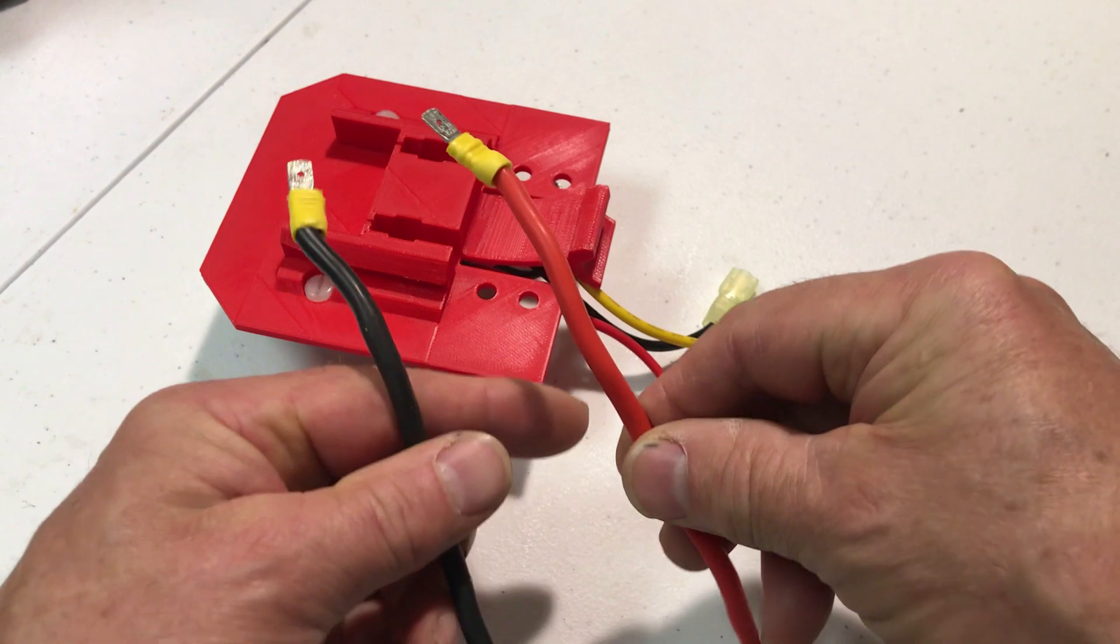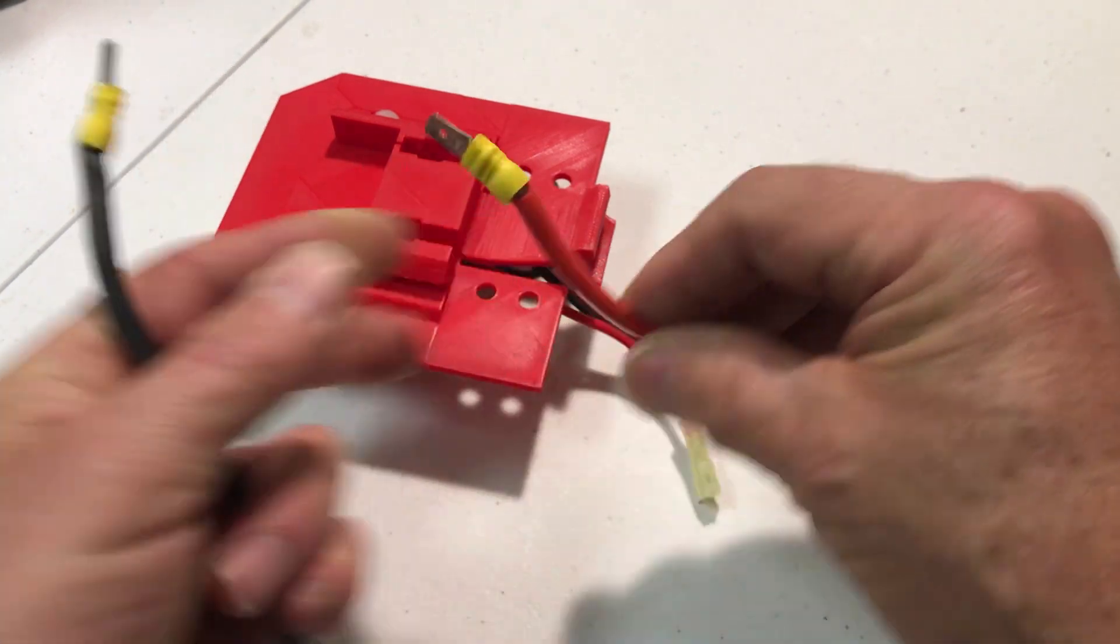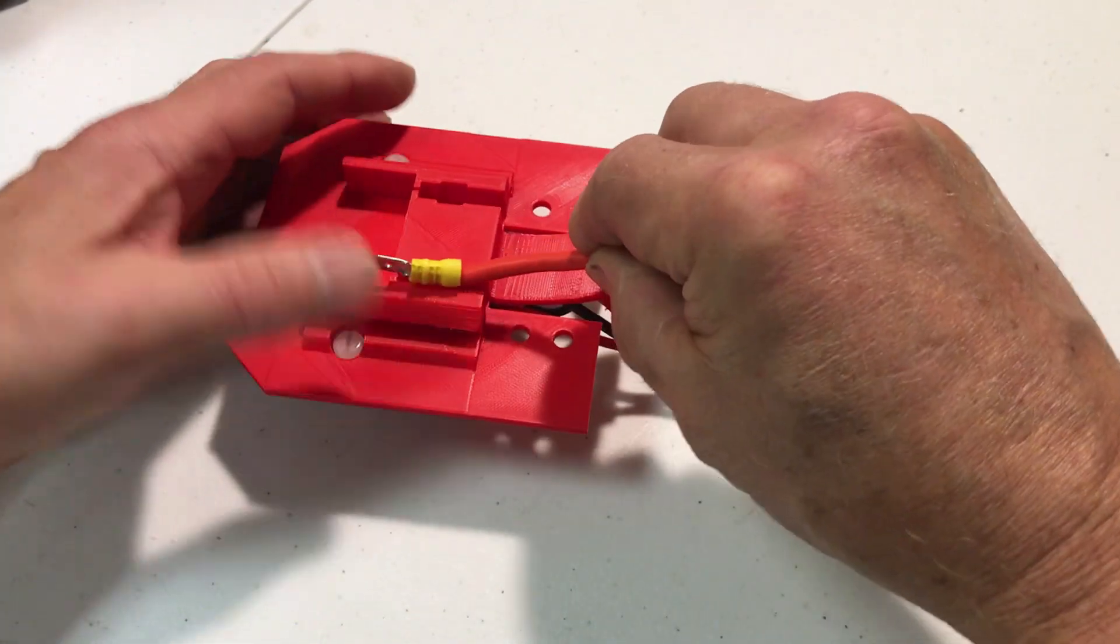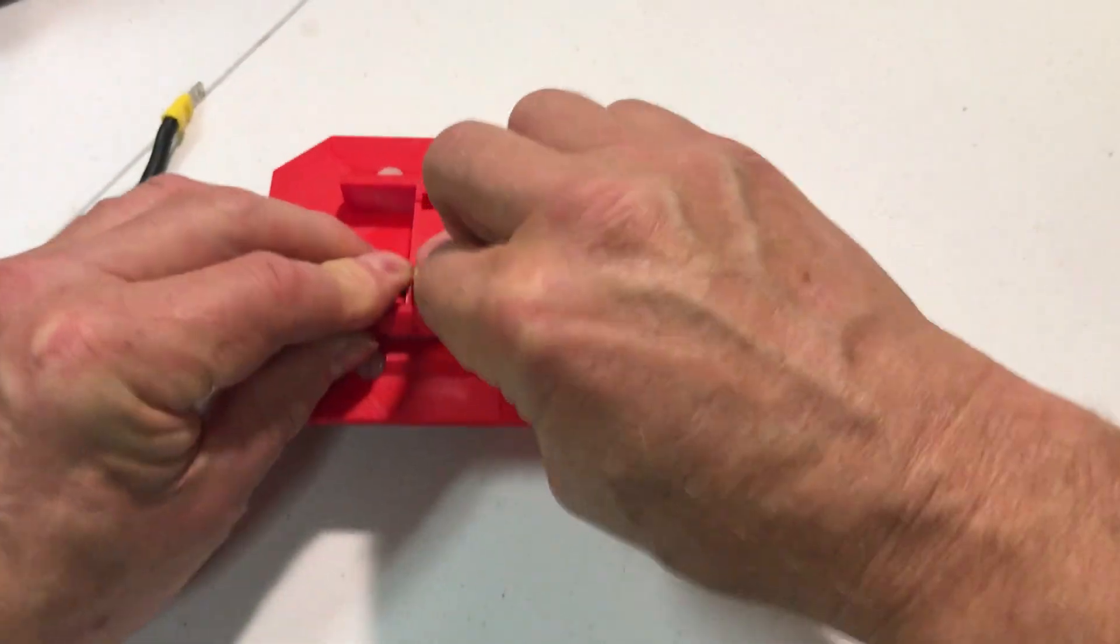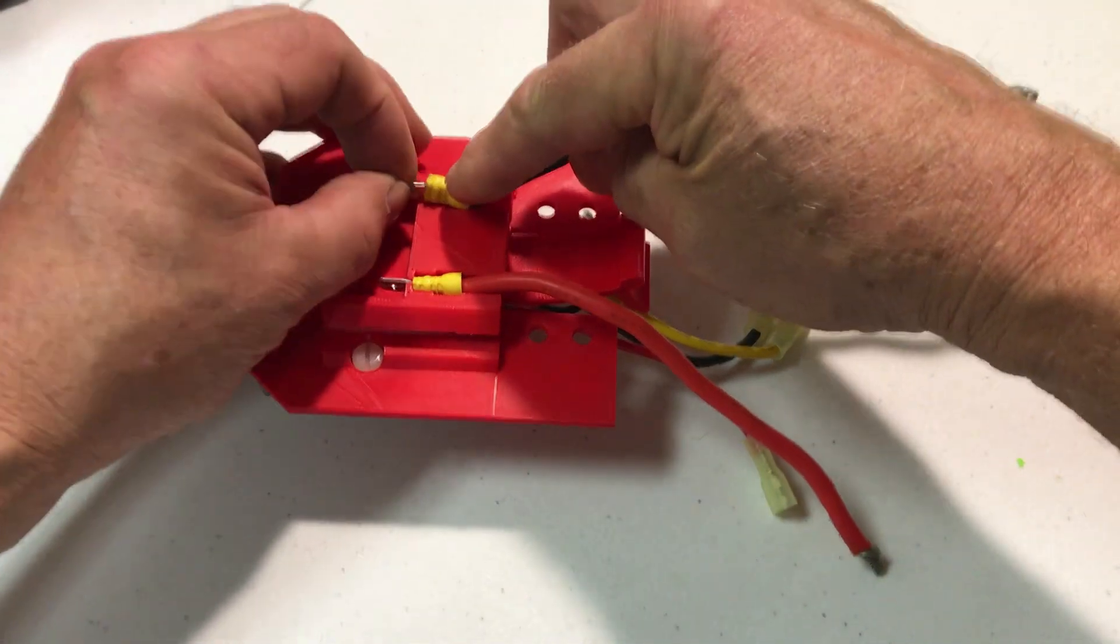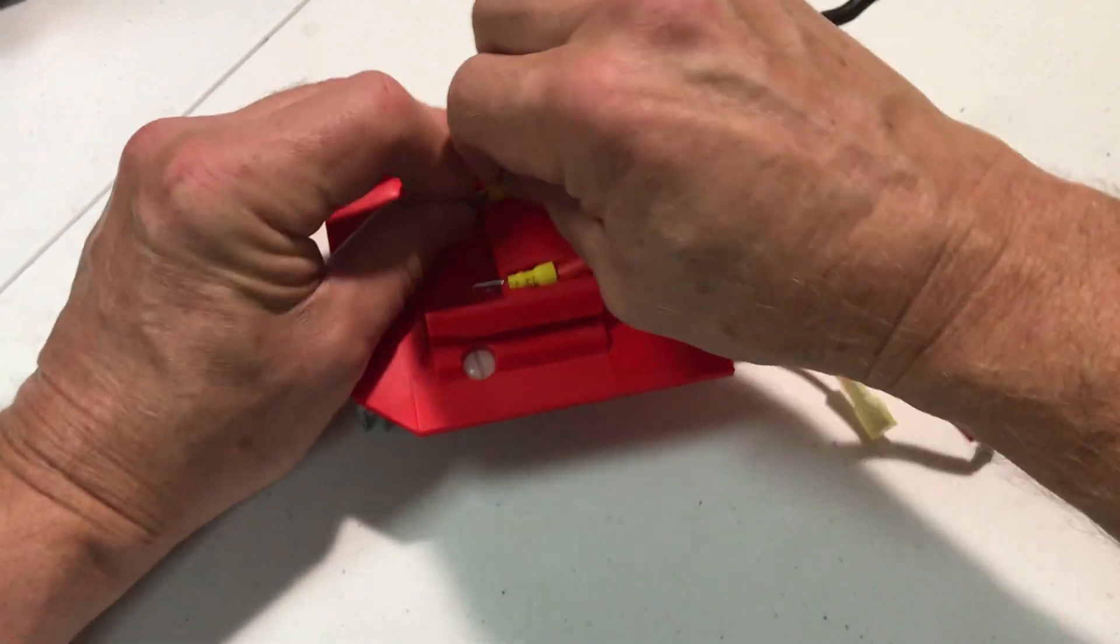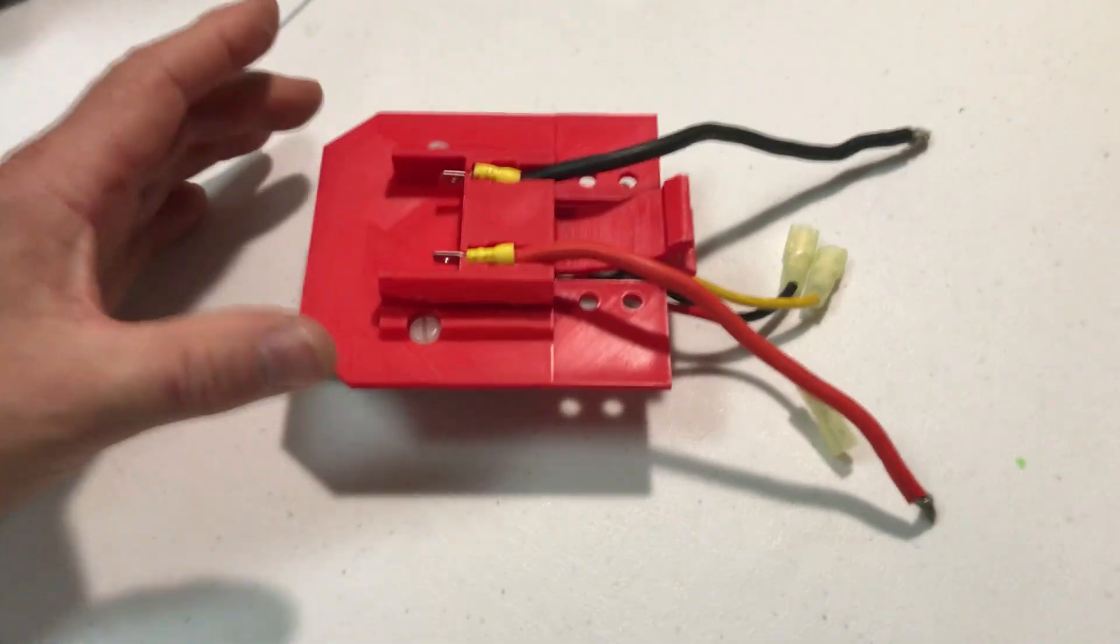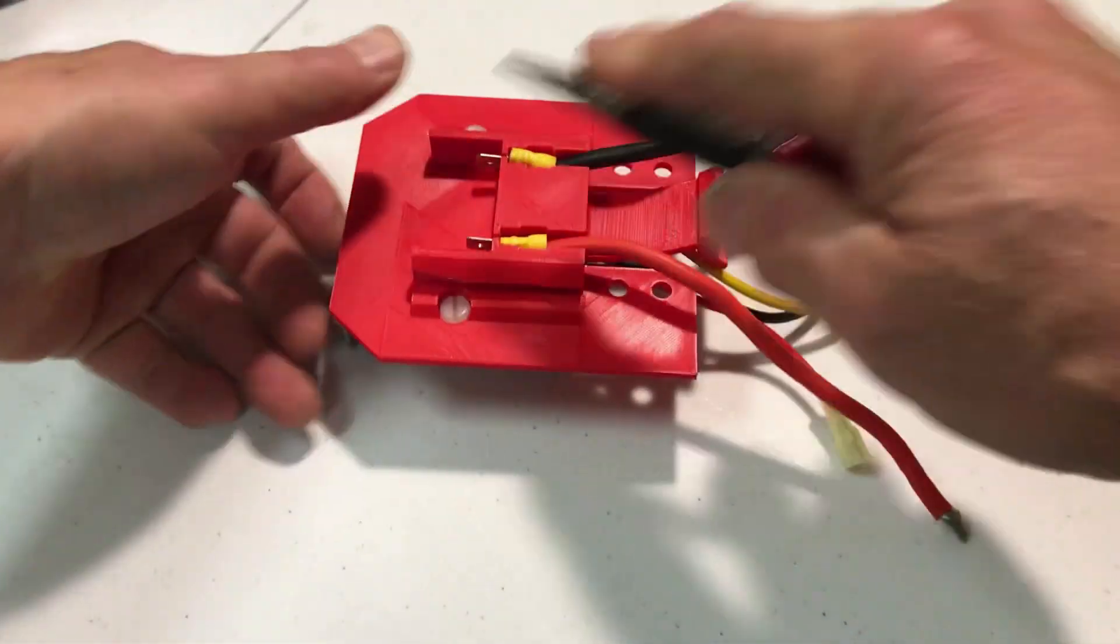So I've made up two six inch wires that have spade connectors on the end and these are just going to fit into these slots here and they just press fit in and then you can push them down further with the pliers.